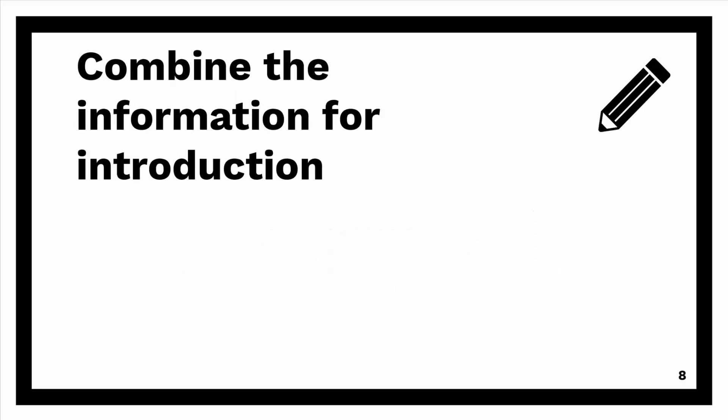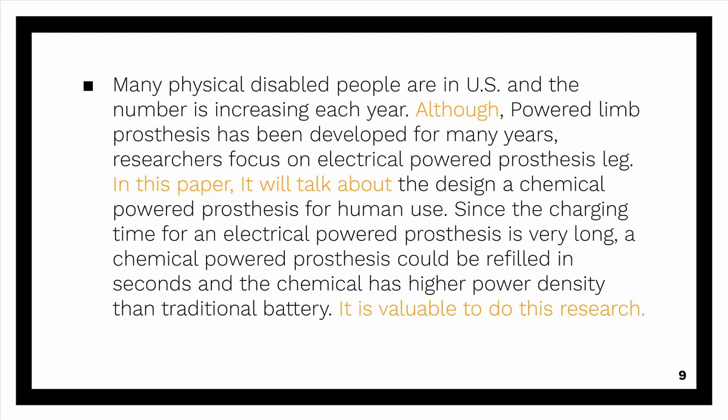Now the next step is to combine all the information together to create the introduction. This step sounds quite difficult, but actually it is extremely simple after you answer all the previous questions. Let's read this paragraph together: Many physically disabled people are in the US and the number is increasing each year. Although powered prosthesis has been developed for many years, researchers focus on electrical powered prosthesis legs. This paper will focus on the design of a chemical powered prosthesis for human use. Since the charging time for an electrical powered prosthesis is very long, a chemical powered prosthesis could be refueled in seconds, and the chemical has higher power density than the traditional battery. It is valuable to do this research. You can see I only added a few words in the paragraph, highlighted in orange.